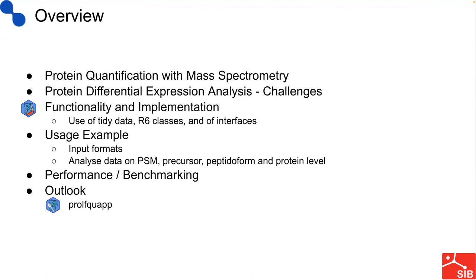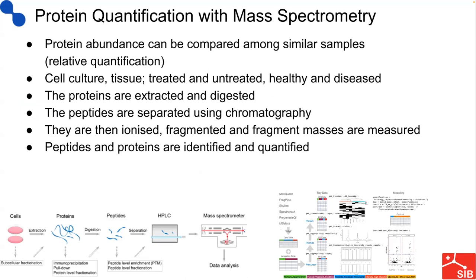First, I will introduce protein quantification with mass spectrometry. Then I will mention some challenges when implementing the R package, introduce the functionality and the implementation of the R package, show how we use tidy data, R6 classes and interfaces to make the use of the package easier. Then I will show usage examples, talk on input formats and how to analyze the data on PSM, precursor, peptide, and protein level. Finally, I will briefly summarize our benchmarking results, compare the performance of our R package with other packages, and give an outlook of further developments we plan.